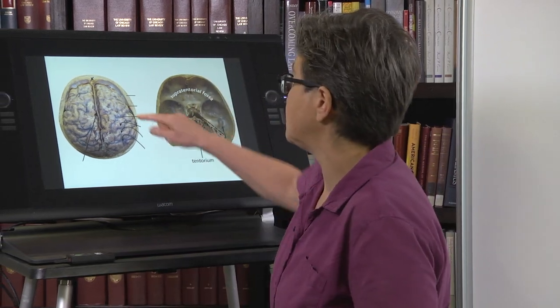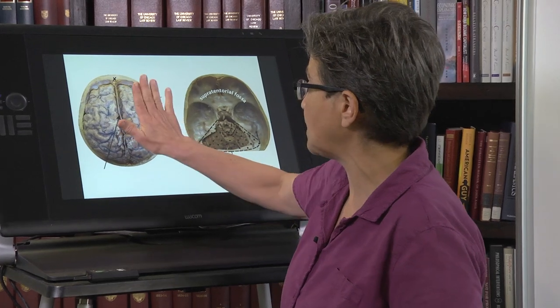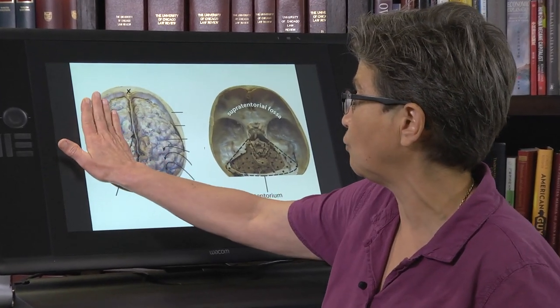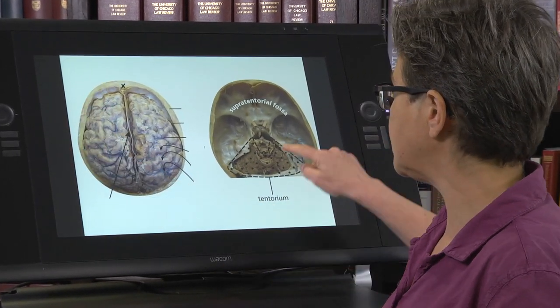The way that we separate one compartment from another is using not just dura but a fold of dura—so it's a double thickness of dura. There are two folds of dura: one is the falx cerebri that separates the right hemisphere from the left hemisphere.